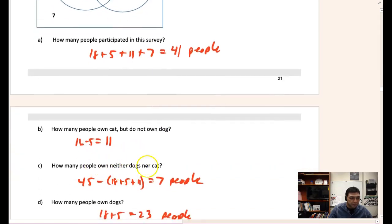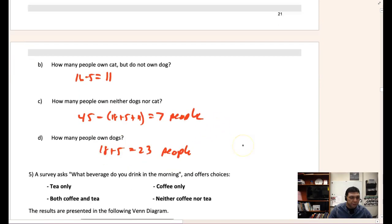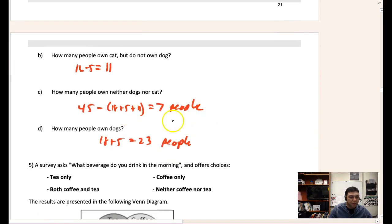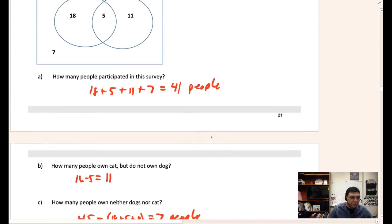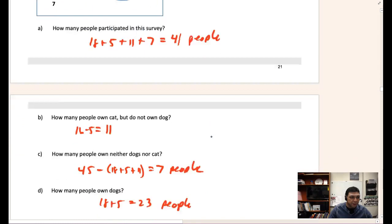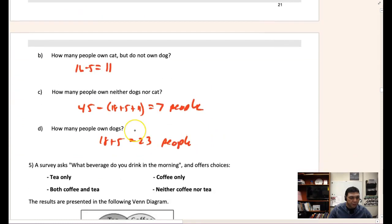How many people own neither cats or dogs? Take a look at the answer there, look at the math there. And then how many people own dogs? Notice that one - 18 plus 5. So take a little time to think about that and look at that.